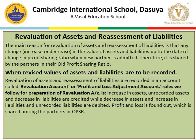We are going to do case number one: when revised values of assets and liabilities are to be recorded. Revaluation of assets and liabilities are recorded in an account called the revaluation account or profit and loss adjustment account. The rules we follow: increase in assets, unrecorded assets, and decrease in liabilities are credited because these are gains, while decrease in assets, increase in liabilities, and unrecorded liabilities are debited.